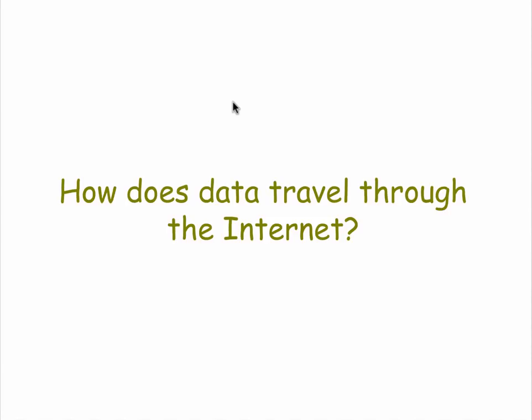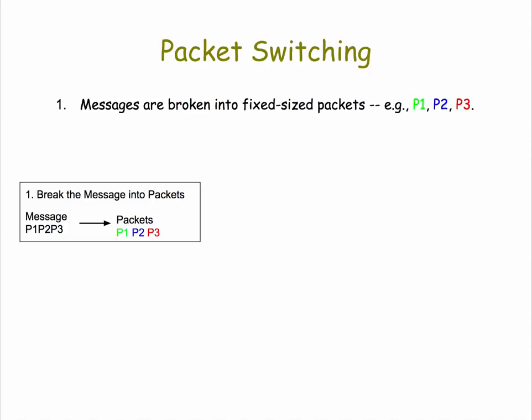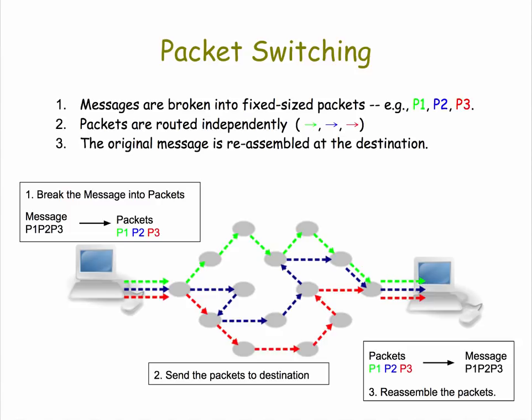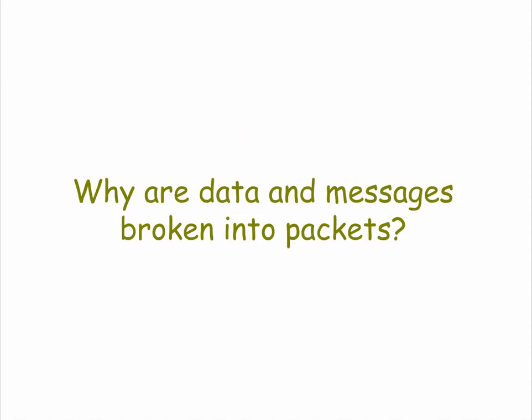Let's now talk about how data travels through the Internet. It uses a protocol called packet switching. Imagine you're sending an email to your friend and it's a long email. Your email application is going to hand that off to a protocol that breaks the message into fixed-size, relatively small packets — P1, P2, P3. Those packets are sent through the Internet to the destination. Notice that the packets can take different routes through the network. When they arrive at their destination, they have to be gathered together and reassembled. There's no guarantee they'll arrive in the order P1, P2, P3, but they have to be reassembled in that order for you to read them.